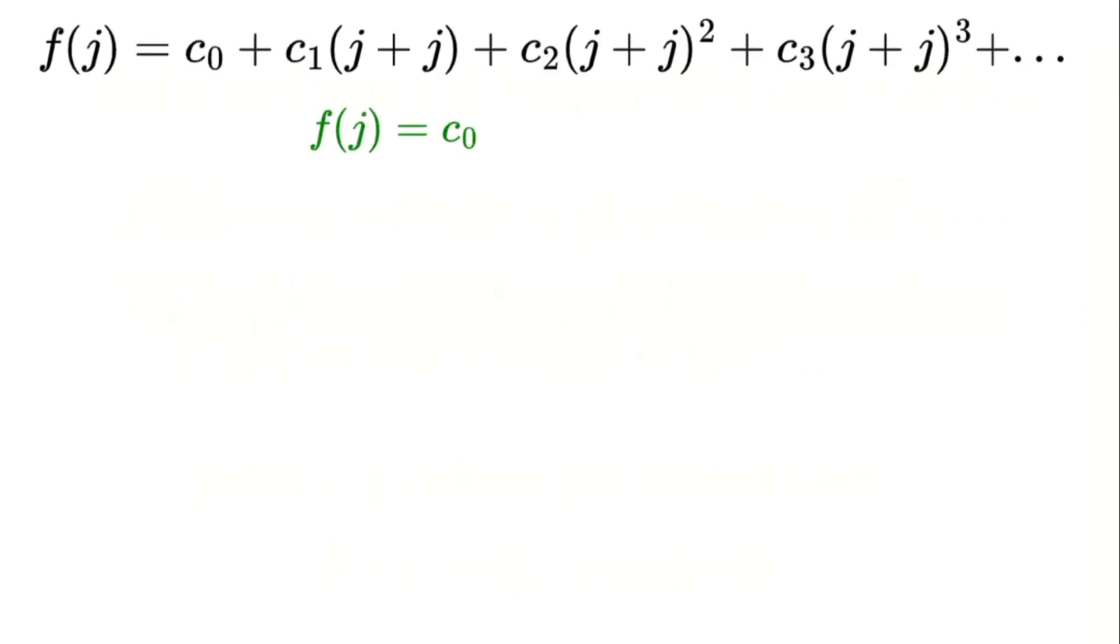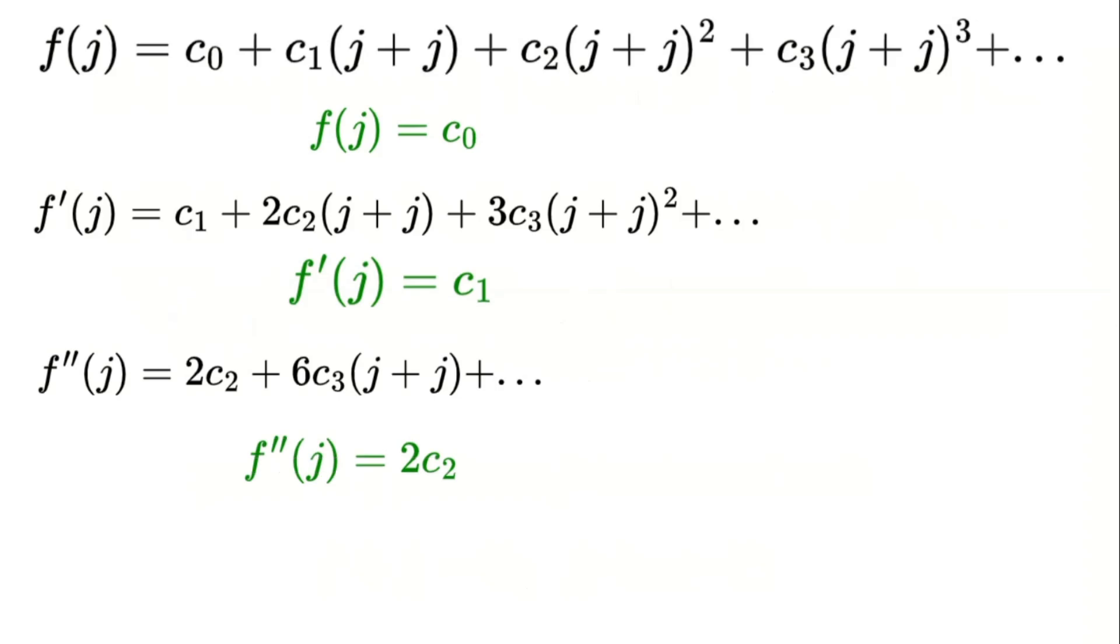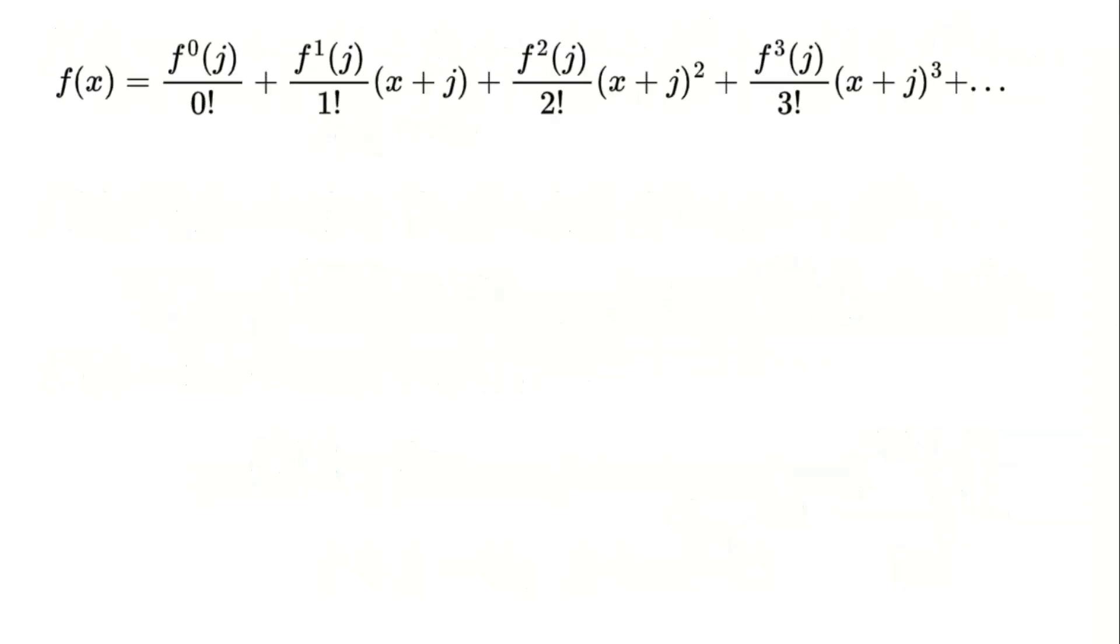For instance, substituting j into the function provides the first constant term of the series. When j is substituted into the first derivative, it determines the coefficient of the linear term. For the second derivative, substituting j yields the coefficient of the quadratic term multiplied by 2. This systematic approach continues for higher derivatives, allowing the function to be rewritten as a series of terms, each influenced by the virtual number j.